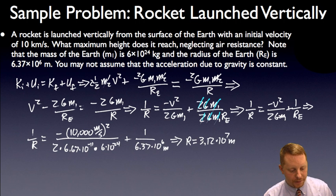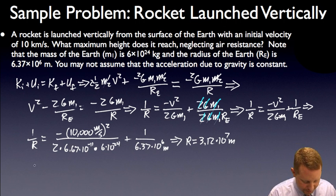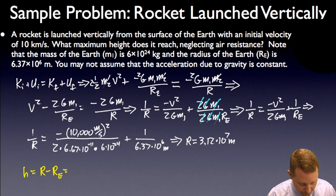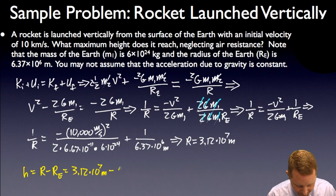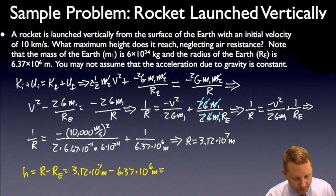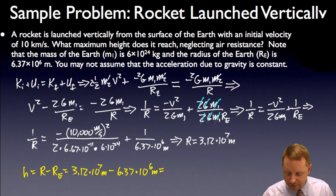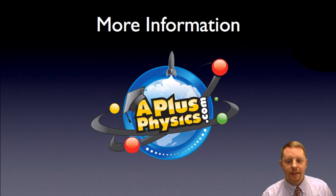The height above Earth's surface is r minus the radius of the Earth: approximately 3.12×10⁷ meters minus 6.37×10⁶ meters. I'll leave that calculation for you to finish up. Hopefully that gets you started with orbits. If you need more help or information, check out aplusphysics.com. Thanks and make it a great day.